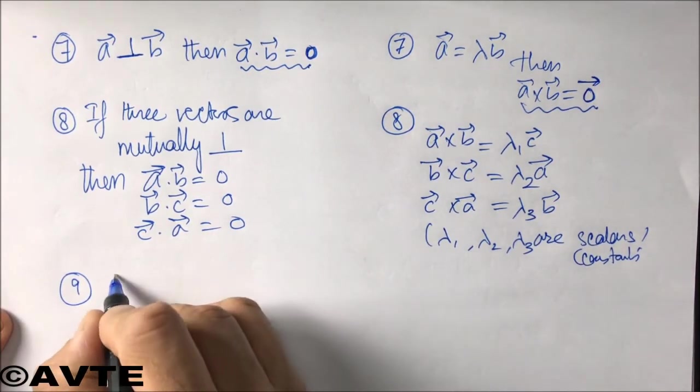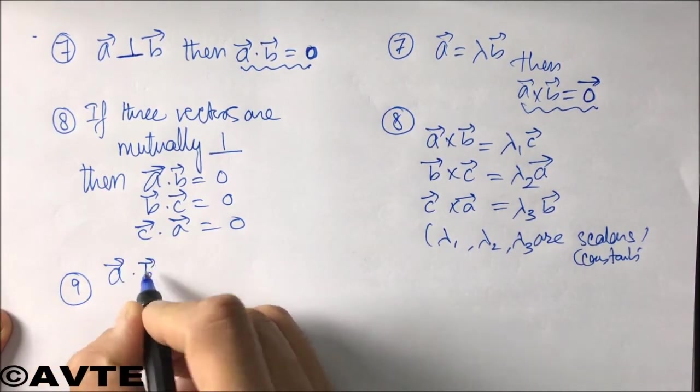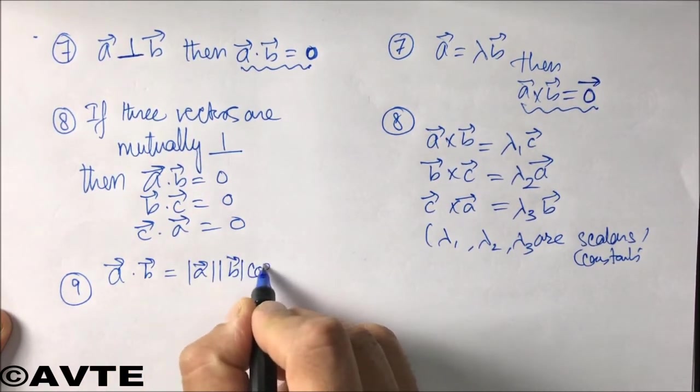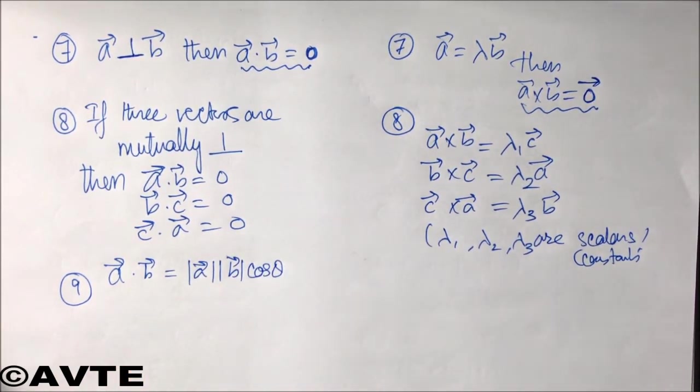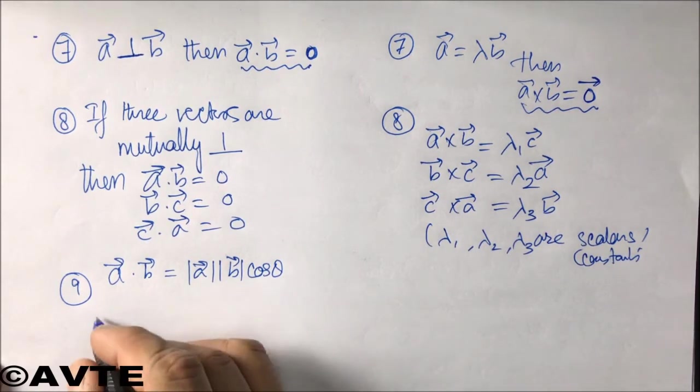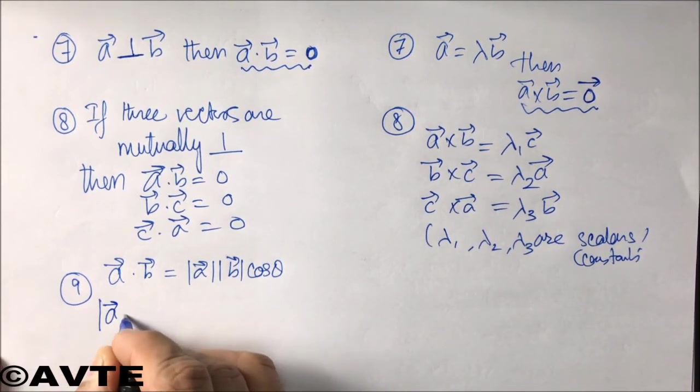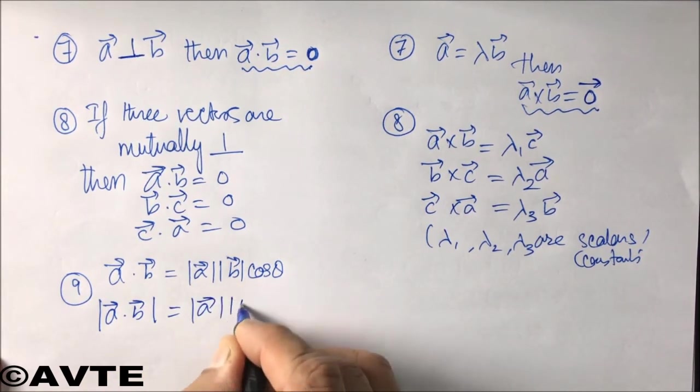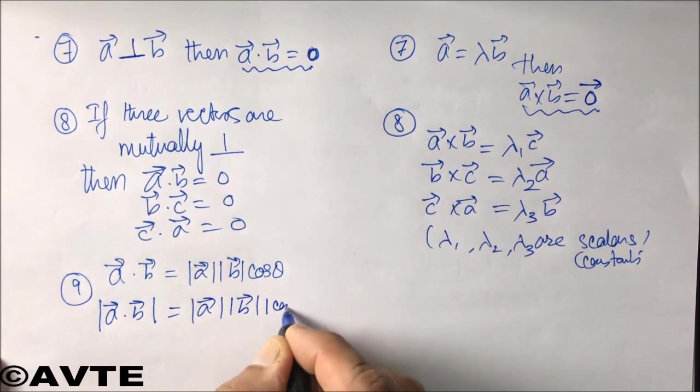Next, if I take the absolute value of dot product - because this side, the number can be negative because cos, the range of cos theta is minus one to one, so the dot product can be negative. So if I have to take the modulus value, then a dot b whole mod will be mod a mod b and mod of cos theta.